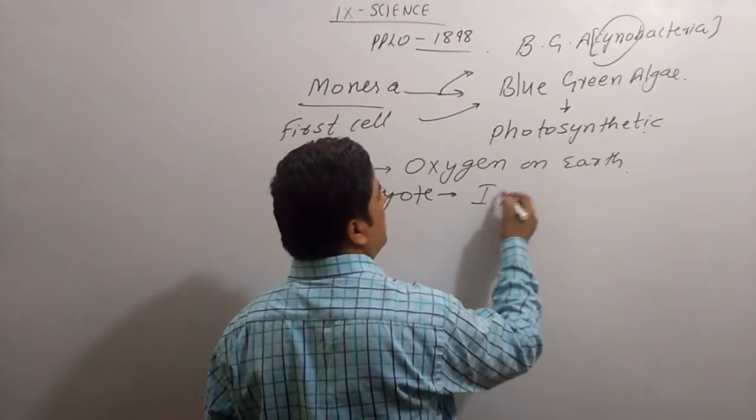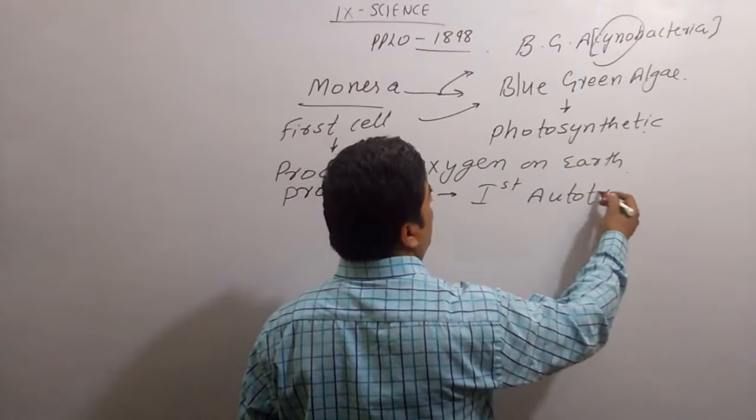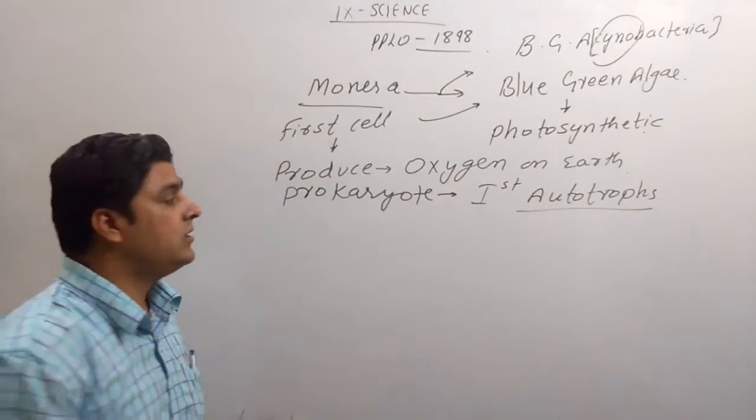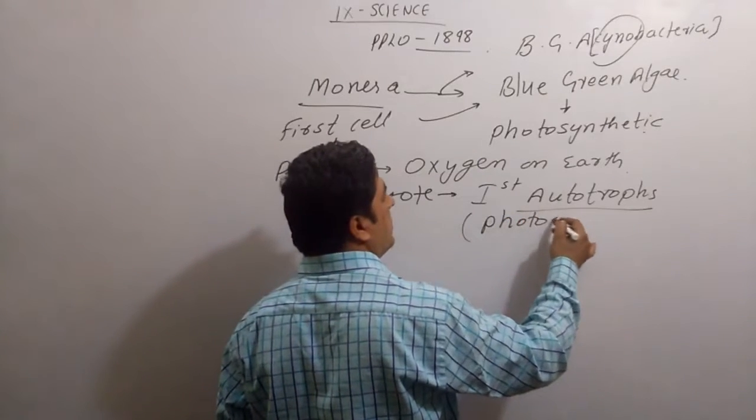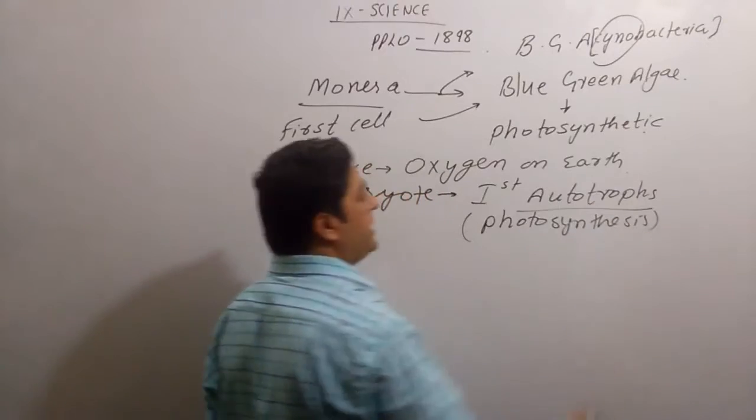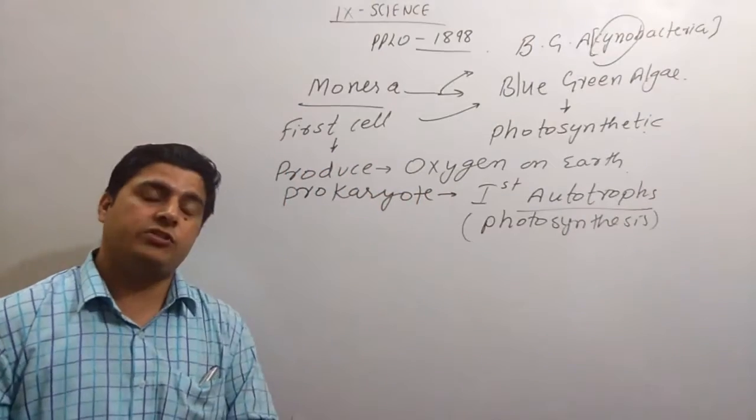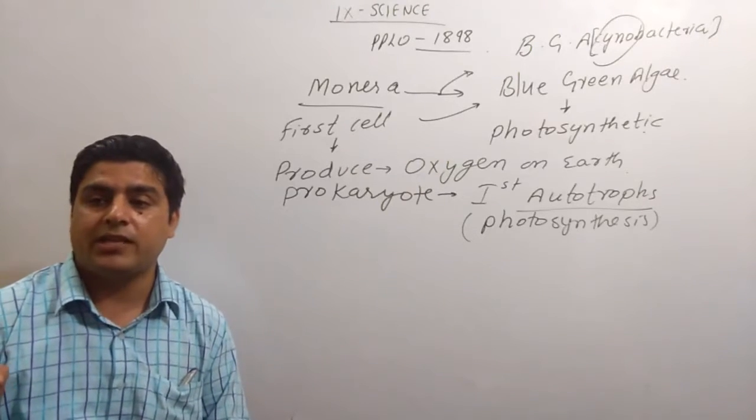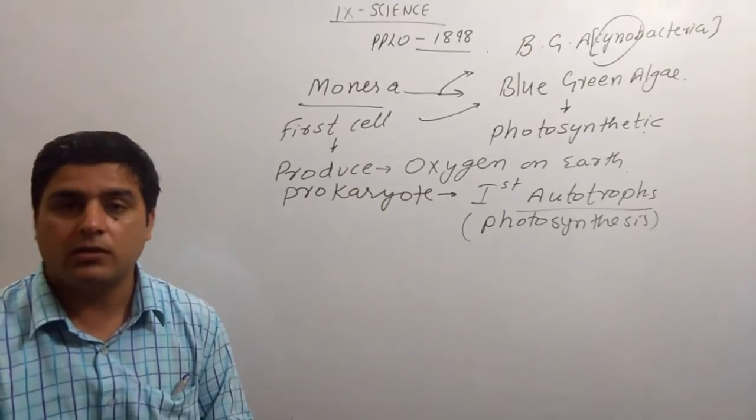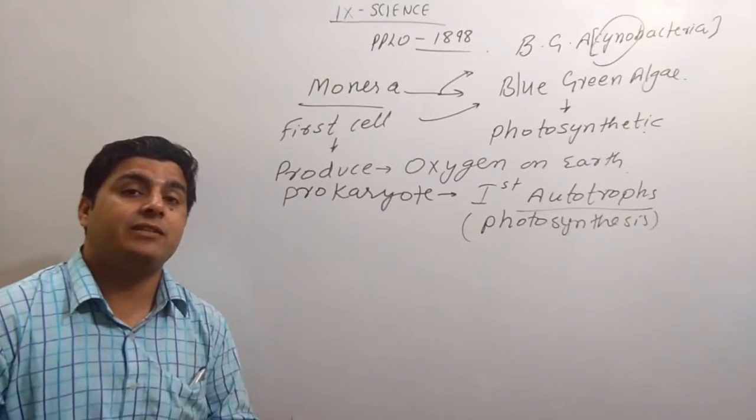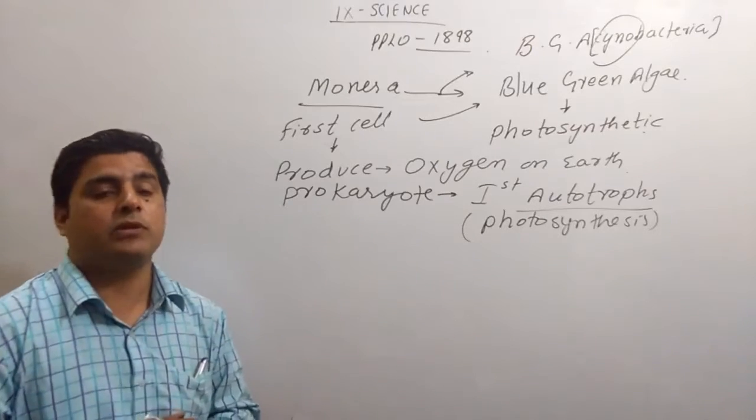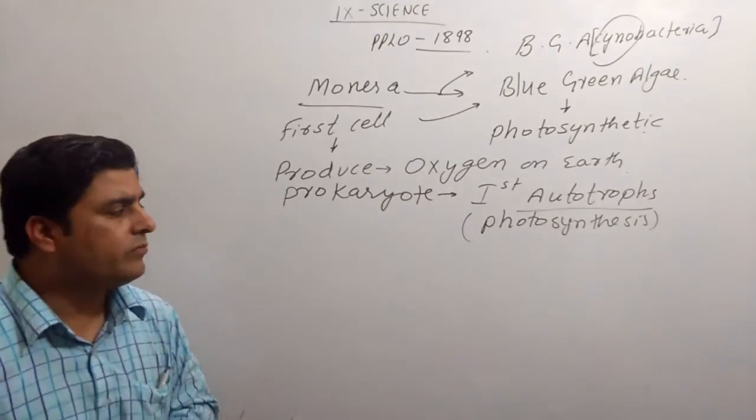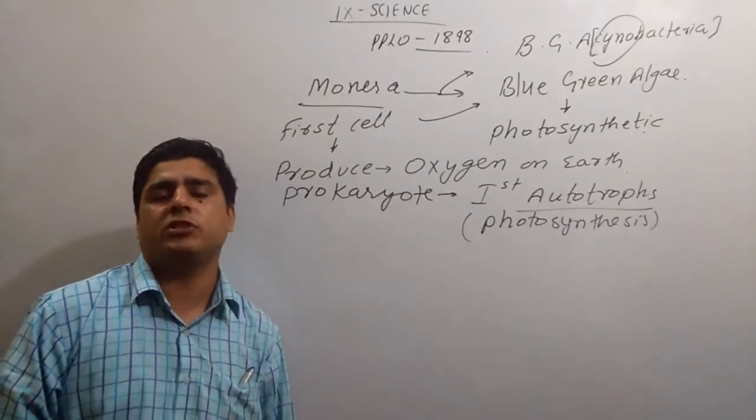So, first autotroph—but in the sense of photosynthesis. Why I restricted it as first autotroph in photosynthesis: because some iron bacteria and sulfur bacteria are there, they can synthesize their food by their own. They did it before this cyanobacteria, that's why I put one mark, because I will confirm which one performed their duty first. But this is the photosynthesis first.